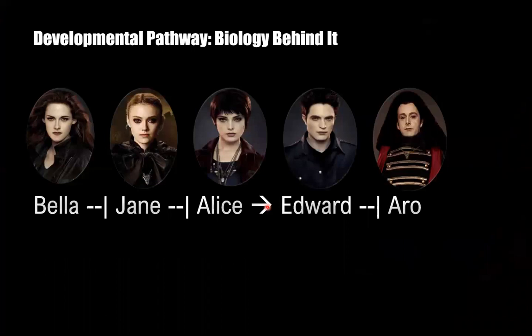Here we have our developmental pathway. Ro and Jane are bad guys — they're members of the Volturi, and the Volturi are the antagonists of the Twilight Saga. Bella, Alice, and Edward are in the same coven; Alice is Edward's sister and Bella is Edward's wife.